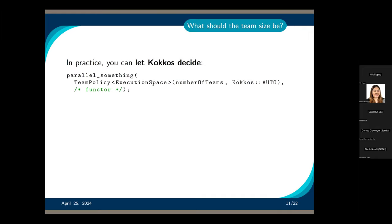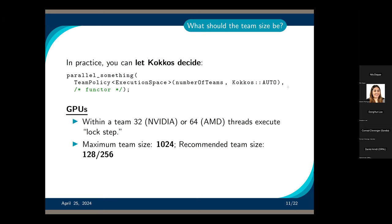For the team size, TeamPolicy takes a number of teams and a team size value specifying how many threads will be available for each team. That value is not always obvious upfront, so it's recommended to use Kokkos::AUTO to have Kokkos figure out the value. For GPU builds, the team size will be either 32 or 64 threads per team — these numbers correspond to warp sizes — and the maximum team size is 1024, which is the maximum number of threads per block. The recommended team size that Kokkos::AUTO will choose is 128 or 256.